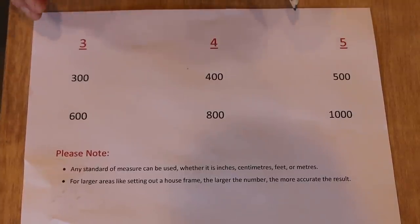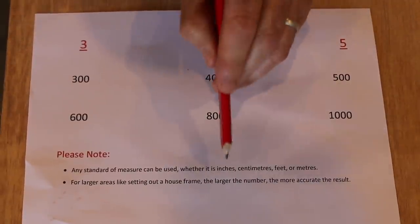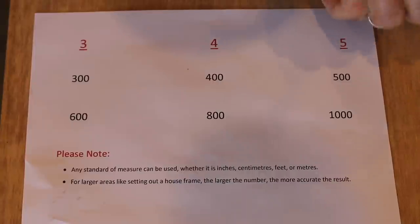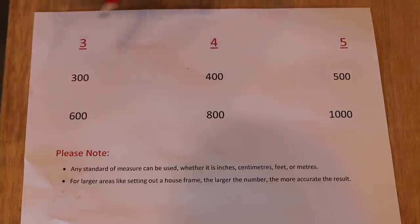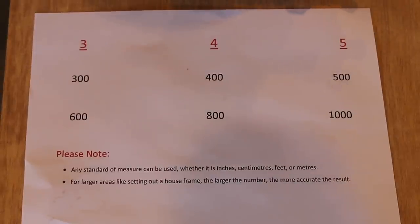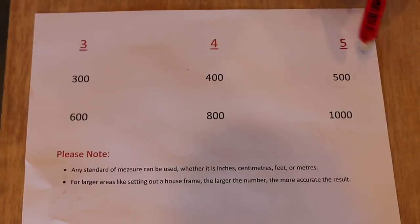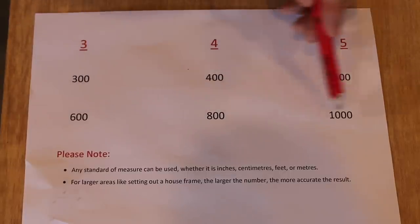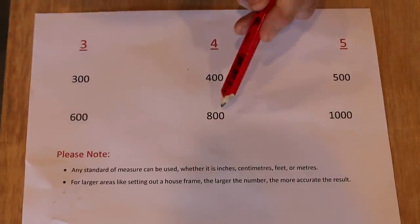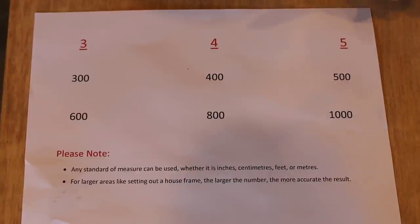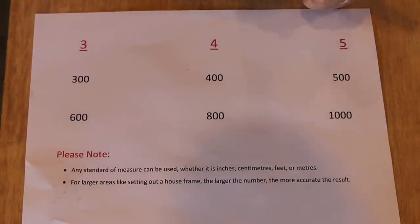Now before I go ahead and show you how to do that, this is a quick example of how the 3-4-5 method works. And it doesn't matter whether you're using inches, centimeters, feet or meters, it's all going to work out the same. Now this row here is example one and this row here is example two. Now the idea is to increase each of those numbers by the same increment. So for this row here, example one, I'm using the increment of 100 millimeters. So three times 100 is 300, four times 100 is 400, and five times 100 is 500. And for example two down here, I'm using the increment of 200 millimeters. So three times 200 is 600, four times 200 is 800, and five times 200 is 1000 or a meter. And using that framework, let's go ahead and mark a square line.